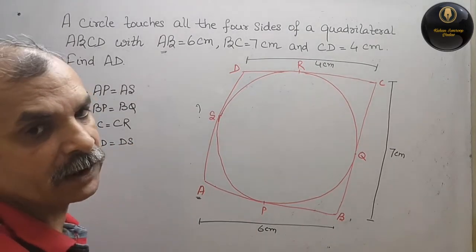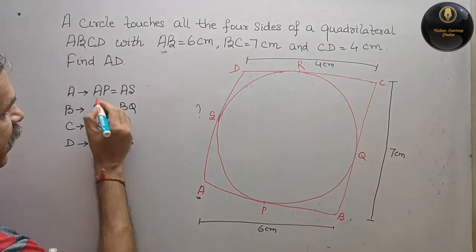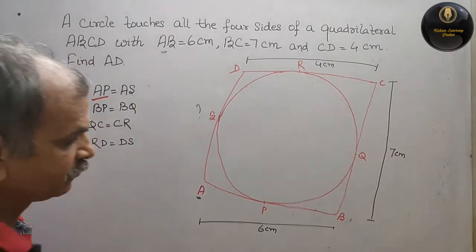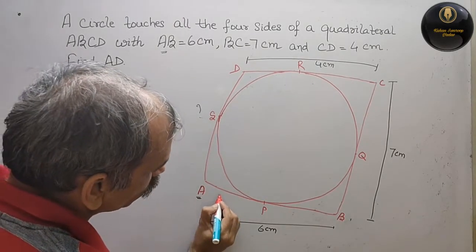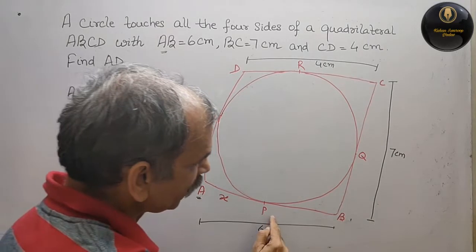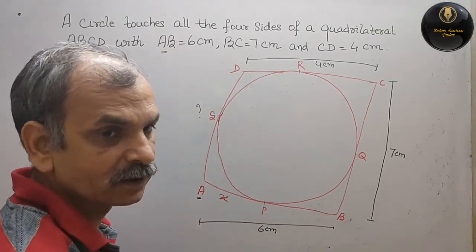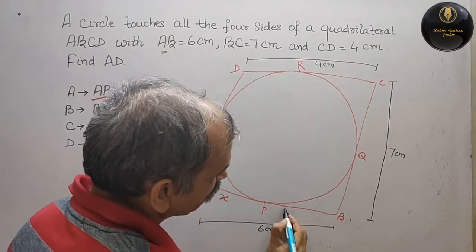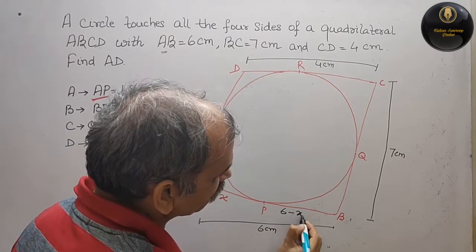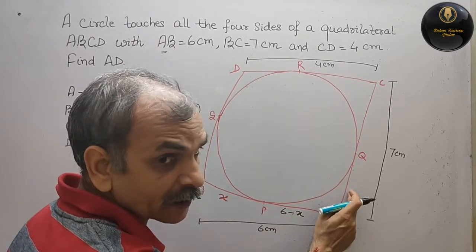Now, first thing is what you have to do. Just you have to take first AP as X. So, suppose AP is X. So PB, what will it be? 6 minus X. So we will write here 6 minus X. If this is 6 minus X, this is also 6 minus X.